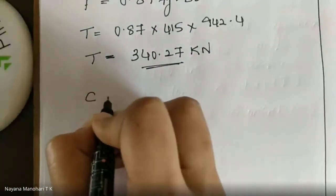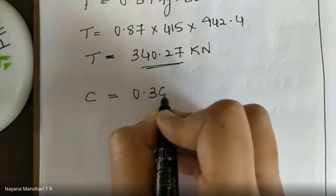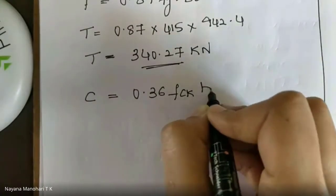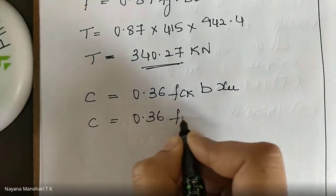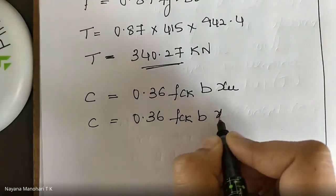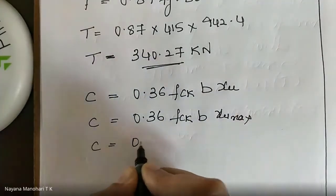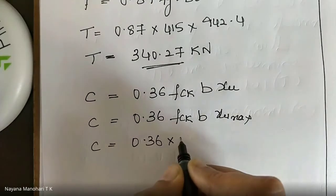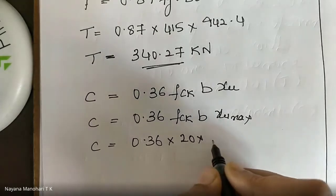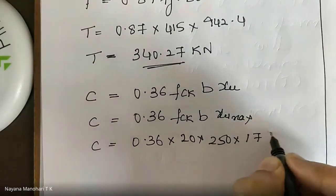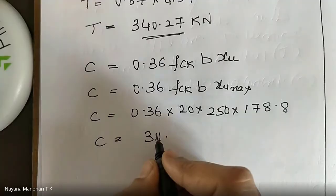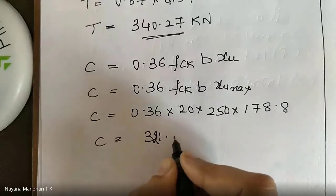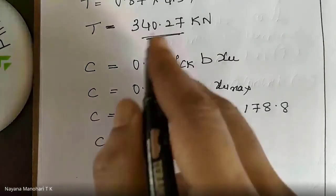Next, calculate the total compressive force in concrete: C = 0.36 × FCK × B × XU. Since it is an over-reinforced section, replace XU with XU max. C = 0.36 × 20 × 250 × 178.8. The compressive force C = 321.8 kN. This is approximately consistent with the tensile force of 340.27 kN, which confirms the calculation is correct.